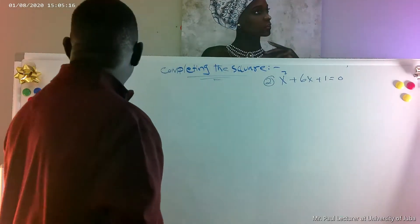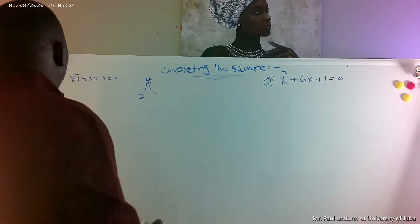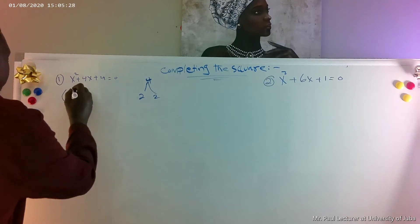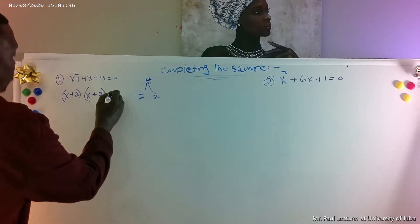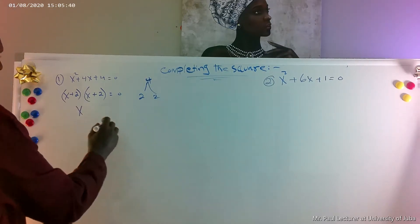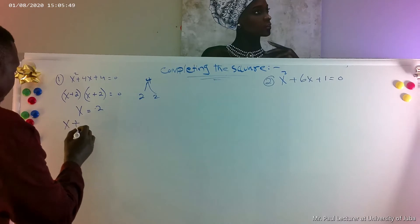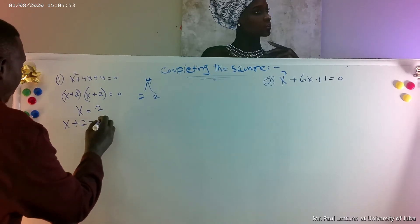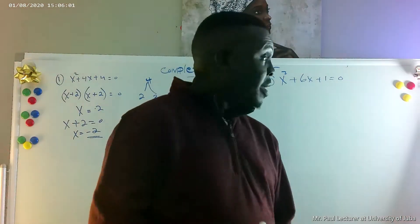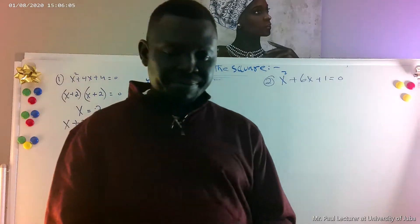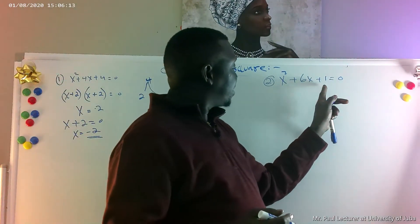We can try to factor equation number two. I have x squared plus 4x plus 4. We can factor this as (x plus 2)(x plus 2) equals zero. Then x equals negative 2, because x plus 2 equals zero. This one can be factored, but the other one — x squared plus 6x plus 1 equals zero — cannot be factored.